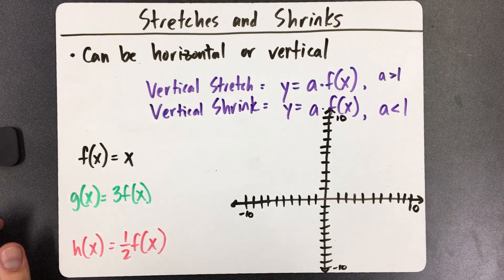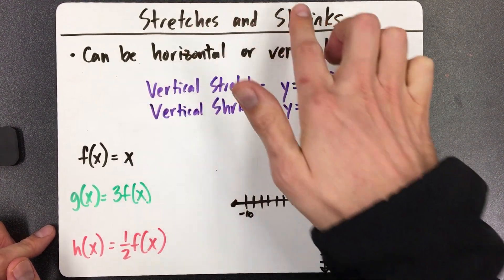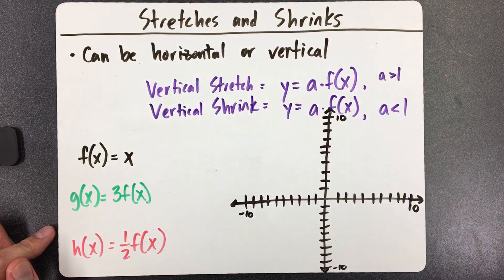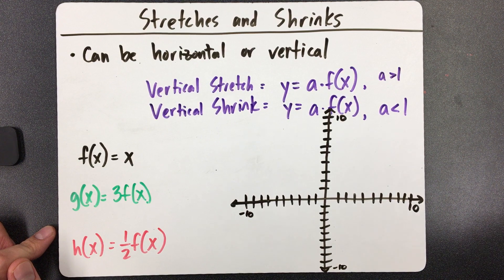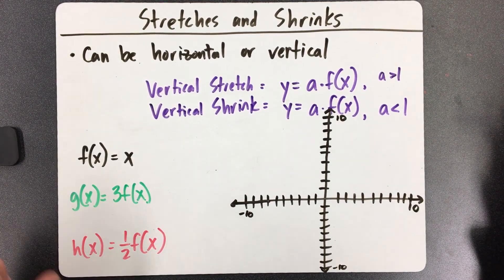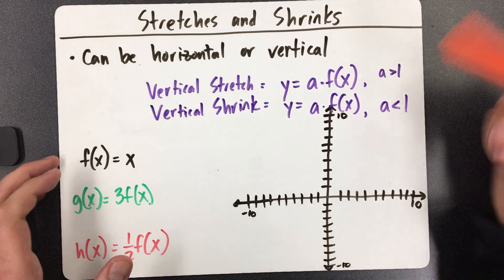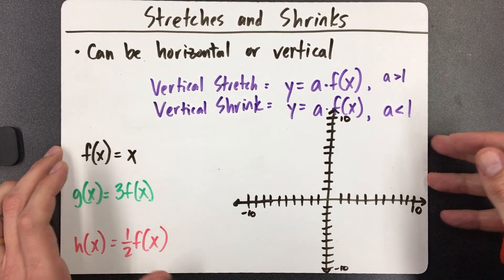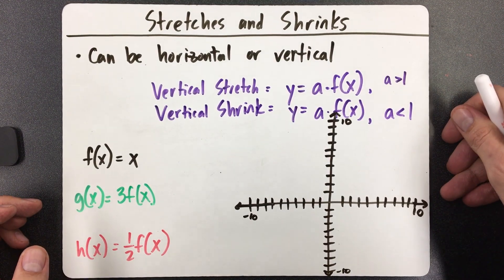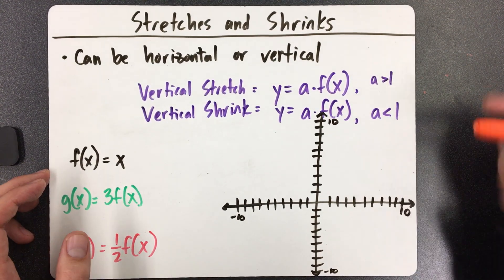So just real quickly, the basics: stretches and shrinks can be horizontal stretches and horizontal shrinks, or they can be vertical stretches and vertical shrinks. In my experience, the questions that pop up most often are usually the vertical ones, so I'm going to address those first. We do have some horizontal ones coming up on a different board, but I don't usually see those as often on big time tests.